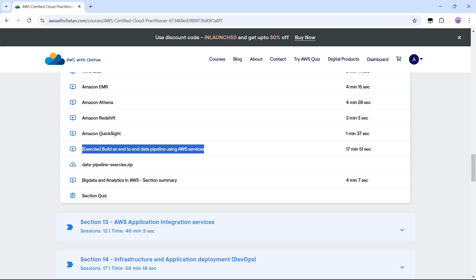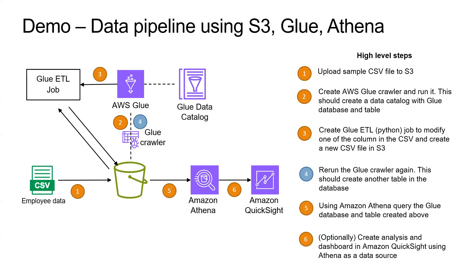Going back to our lab architecture, let's see what we are going to do in this exercise. The use case is simple: we will upload sample employee data in CSV format to Amazon S3, which is our data lake. Once in S3, we want to create a data catalog out of that data, so we will use AWS Glue and create and run a Glue crawler. It will crawl the data, then create a Glue database and table in that database, but the actual data will still be in S3.